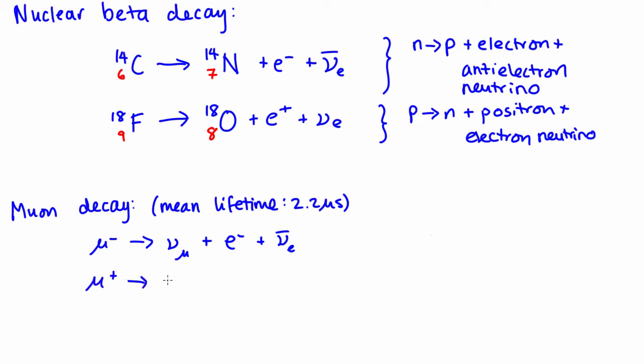So, the muon decays by producing a muon neutrino, an electron, and an anti-electron neutrino. It has a pretty short lifetime of about 2.2 microseconds. The anti-muon decays by emitting the anti-muon neutrino, a positron, and an electron neutrino.